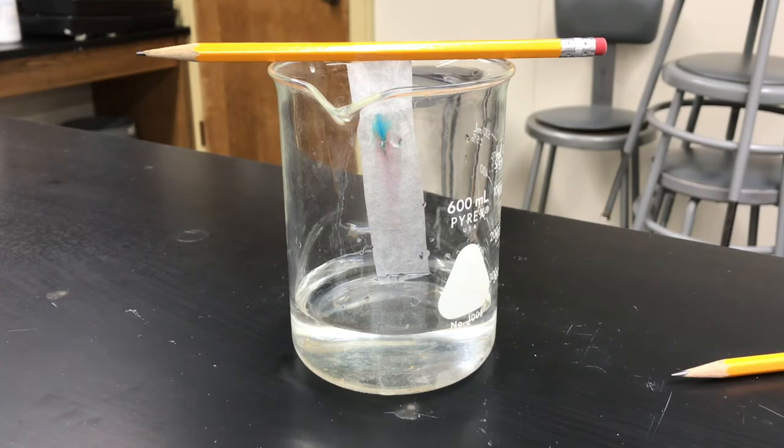After your solvent line has gotten pretty close to the top, you don't want it to touch your pencil, but you want it to be within a half inch or so of the top. Like I said, mine took about 12 minutes. Then you're going to remove it from the beaker.